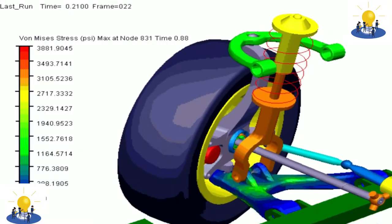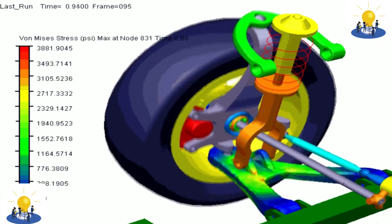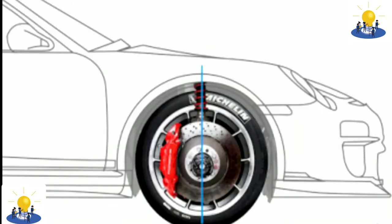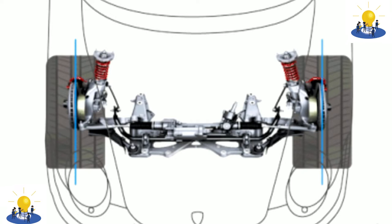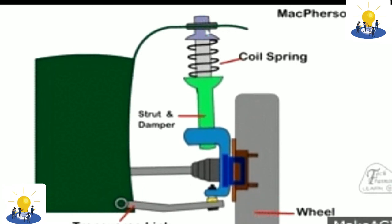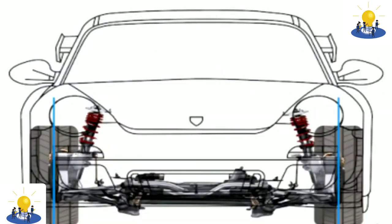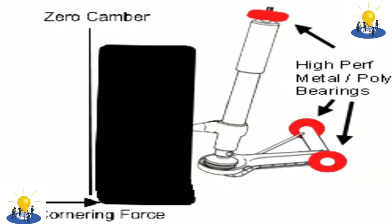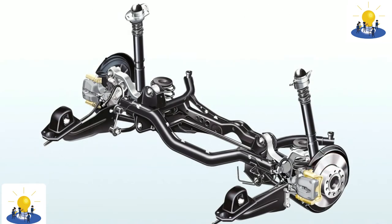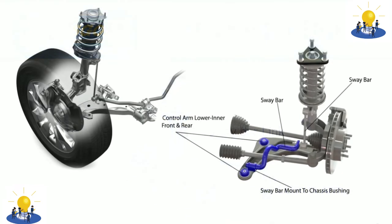The MacPherson strut required the introduction of unitary construction because it needs substantial vertical space and a strong top mount, which unibodies can provide while benefiting them by distributing stresses. The strut will usually carry both the coil spring and the shock absorber, usually in the form of a cartridge mounted within the strut. The strut can also have the steering arm built into the lower outer portion. The whole assembly is very simple and can be preassembled into a unit. By eliminating the upper control arm, it allows for more width in the engine compartment, which is useful for smaller cars, particularly with transverse-mounted engines as in most front-wheel drive vehicles.